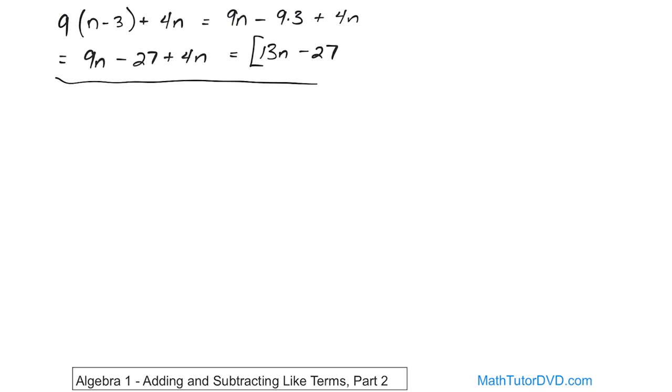All right, so that was kind of a warm-up problem. This one will be a little bit longer. What if we have 9(a + b) inside parentheses, and then we have plus 4, and then here we have (3a + 2b). Now what do we do?